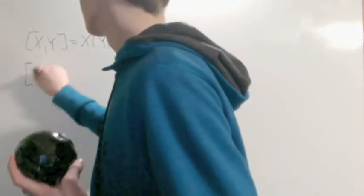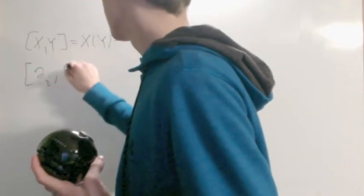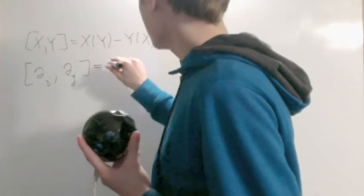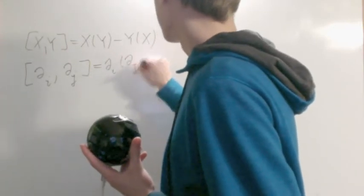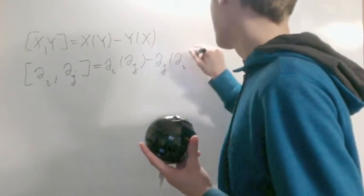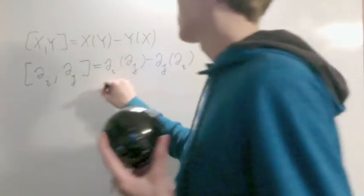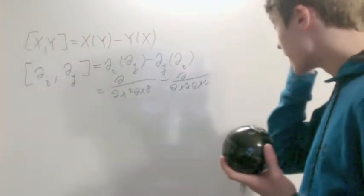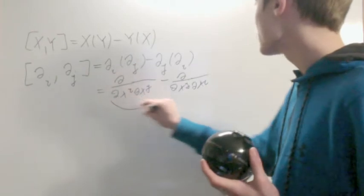So for example, del I del J commutator is going to be equal to del I applied on del J minus del J applied on del I. And as you know, in other notation, we know that these two are equal, so this entire thing becomes zero.